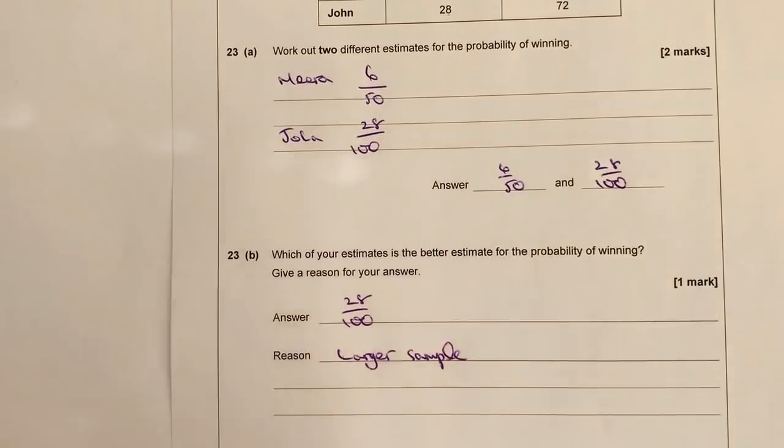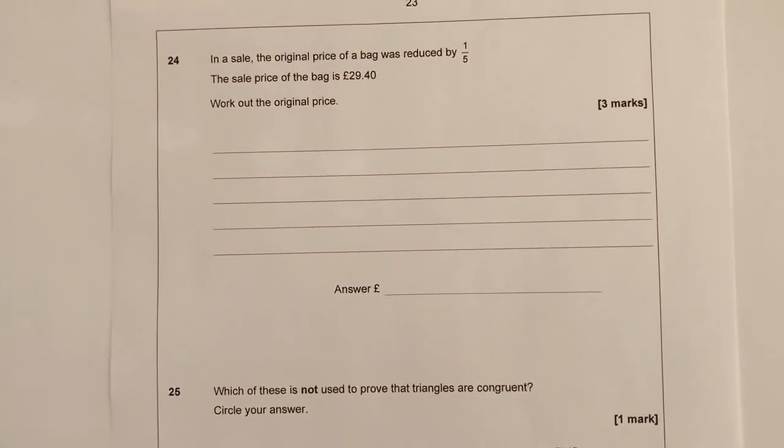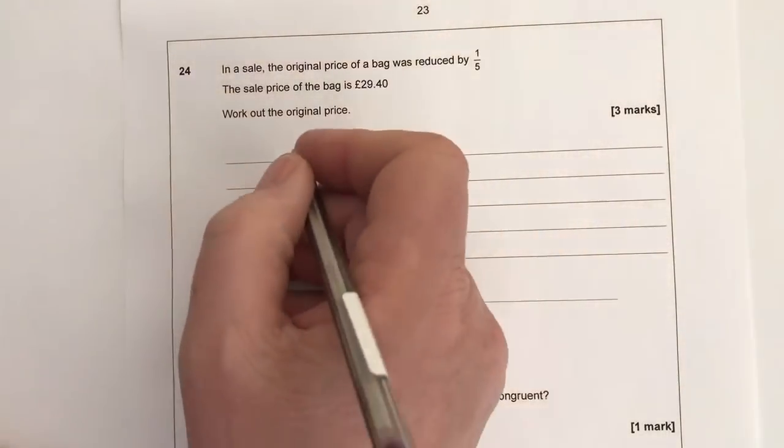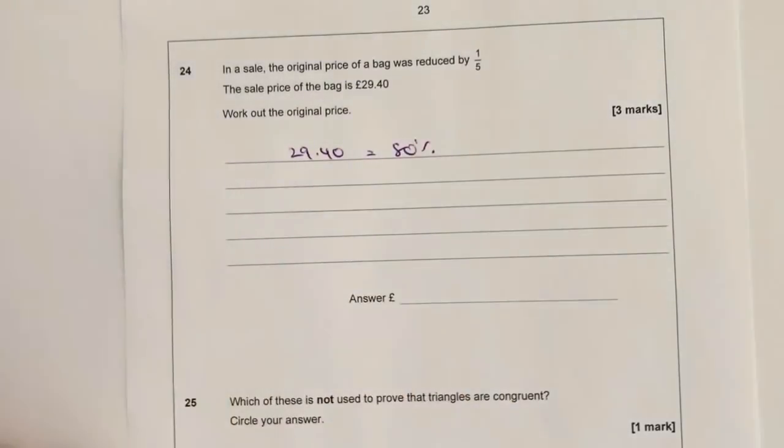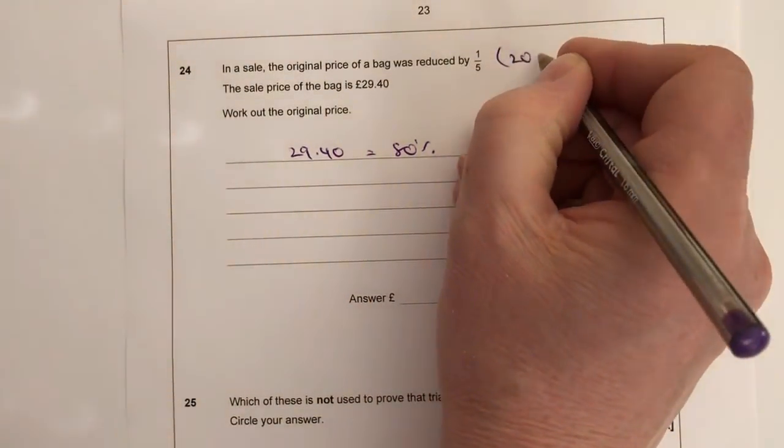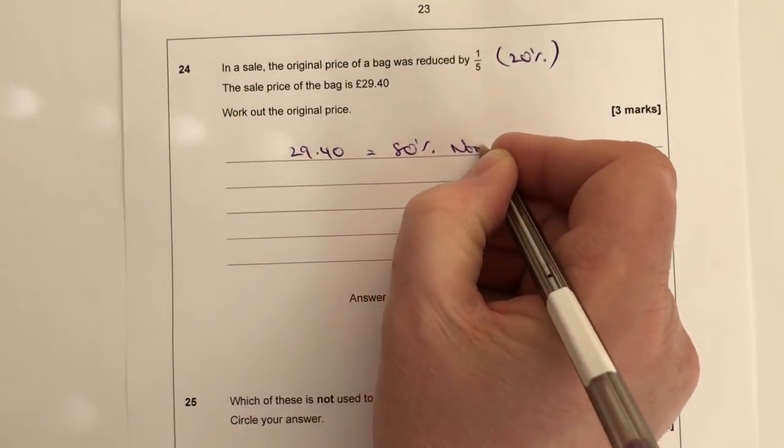So actually the better one would be 28 out of 100, and that's because there is a larger sample. So 100 numbers, 100 rolls he's actually rolled, and he's won 28 out of those 100. Let's have a look then at question number 24. Question 24 says, in a sale the original price of a bag was reduced by one-fifth. So what it means is the sale price, which is £29.40, is equal to 80%, so one-fifth is the same as 20%.